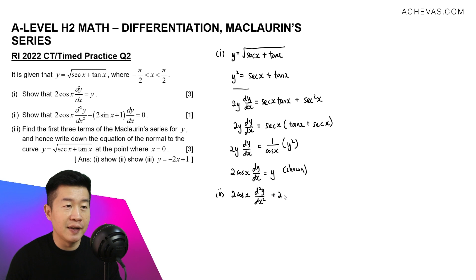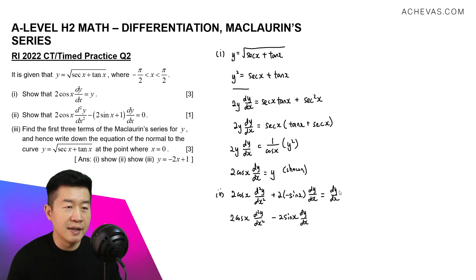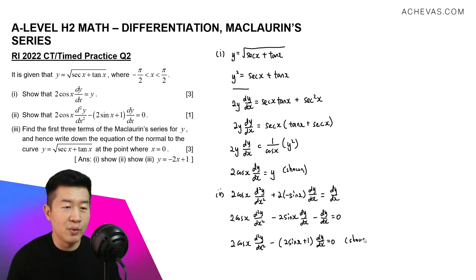Then plus 2, differentiating cosine x gives minus sine x, then dy/dx. This is equal to differentiating the right hand side, which is dy/dx. Bringing this over to the left hand side, we have 2 cosine x · d²y/dx² minus 2 sine x · dy/dx minus dy/dx equals 0. Factorizing out the negative, we get 2 cosine x · d²y/dx² minus (2 sine x + 1) · dy/dx = 0. And this is what we are supposed to show in Part 2.